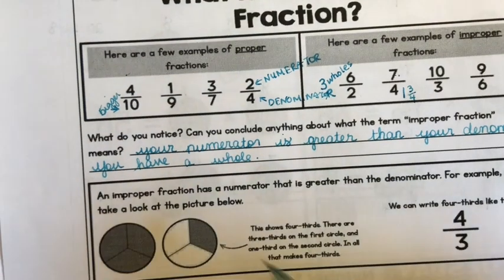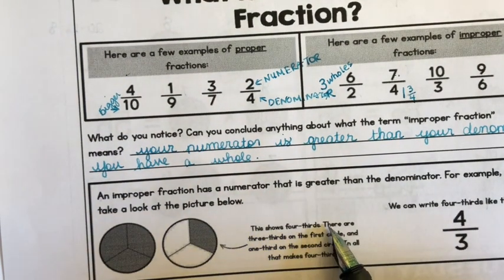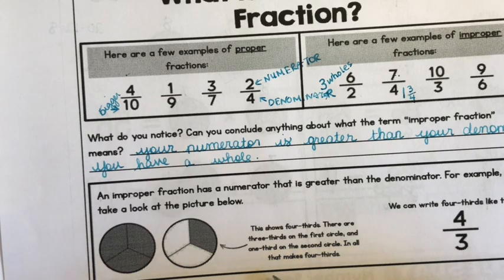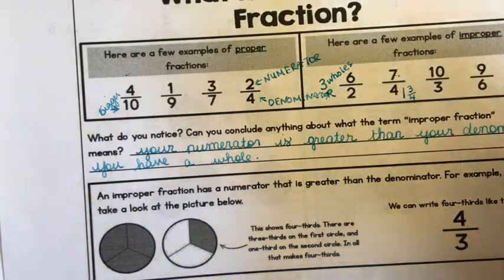Improper fraction means your numerator, that's the number on top, your numerator is greater than your denominator, and that means you have at least one hole. An improper fraction has a numerator that is greater than its denominator. For example, take a look at the picture below. This shows four thirds. There are three thirds on the first circle and one third on the second circle. In all, that makes four thirds. We can write it like this. Four thirds. Improper fraction.